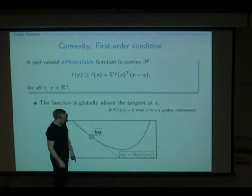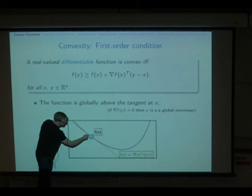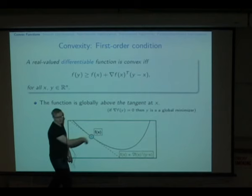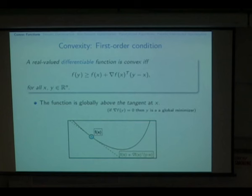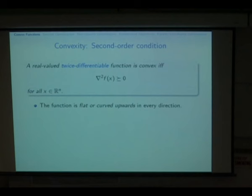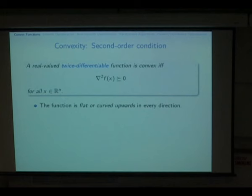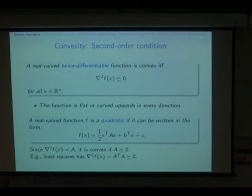In picture form: the function is always above the green tangent line — the linearization hits f(x), agrees with the derivative, but then just goes off linearly while the function stays above. That's a completely equivalent definition of convexity for differentiable functions. If the function is twice differentiable, there's yet another equivalent definition: if the Hessian — the matrix of all first and second derivatives with respect to each variable — is positive semi-definite for all x, then the function is convex. Roughly, this means the function is either flat or curving upward in every direction.